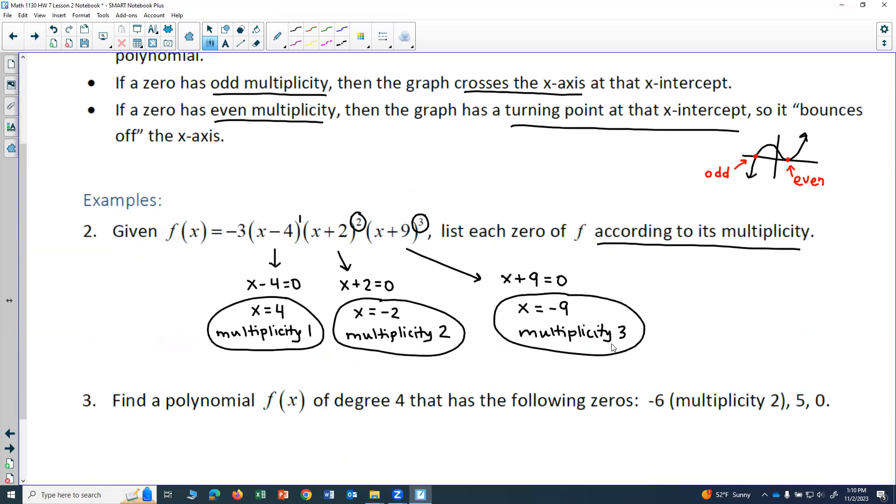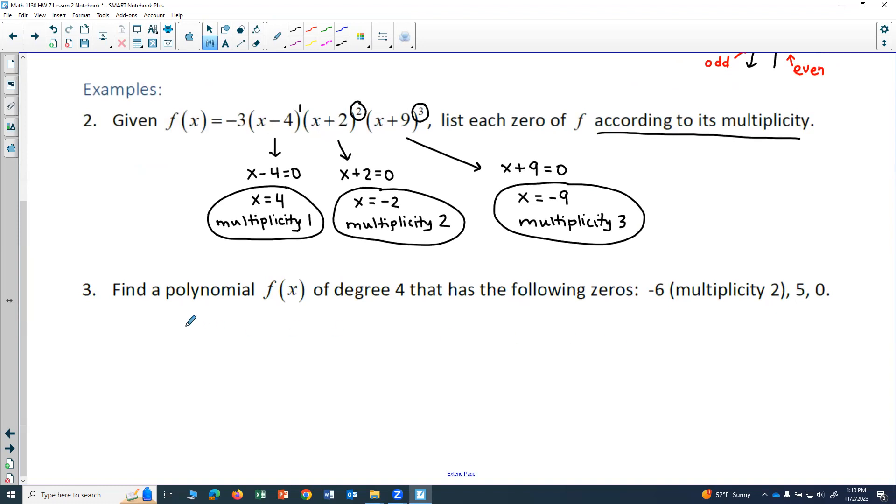Let's look at a different kind of example now. We want to find a polynomial of degree 4 that has the following zeros: negative 6 with multiplicity 2, 5, and 0.